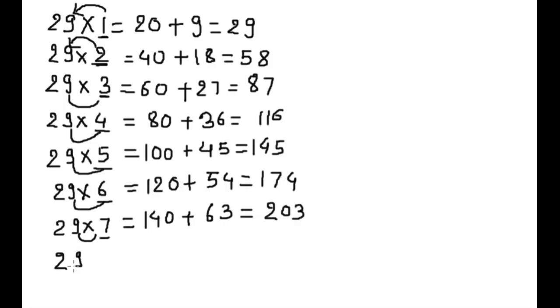29 into 8. Double of 8 is 16. Put 0. 9 into 8 is 72.